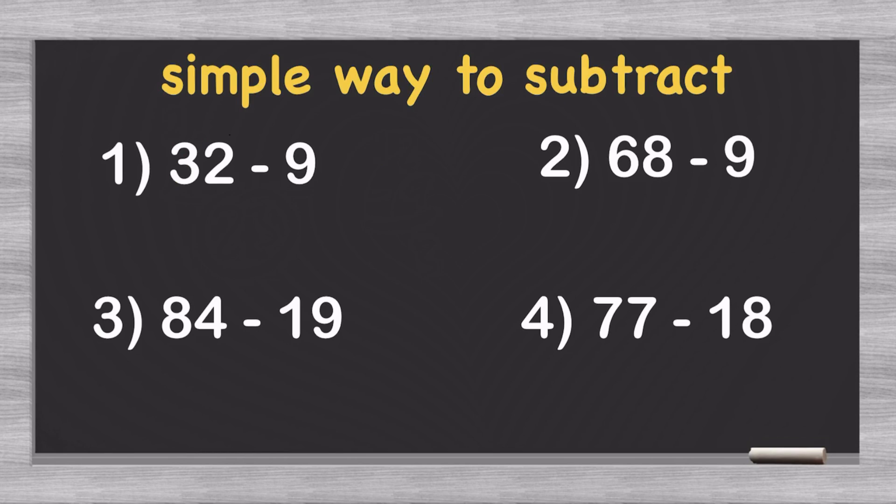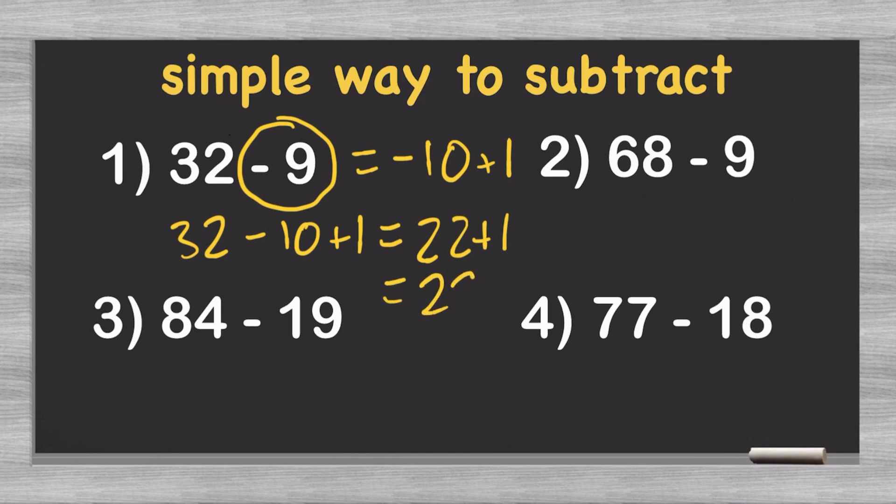And here's how. All you have to do is think of minus 9 as equal to minus 10 plus 1. So really, 32 minus 9 is actually 32 minus 10 plus 1. Now, 32 minus 10 is easy. That's just 22. And then you add the plus 1, and that gives you the real answer of 23. Just as you needed it. And you can see, just like this, how easy this trick is.